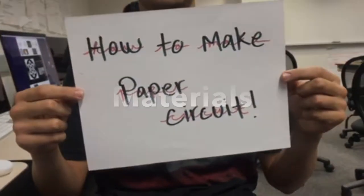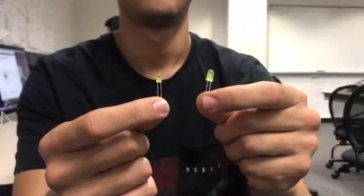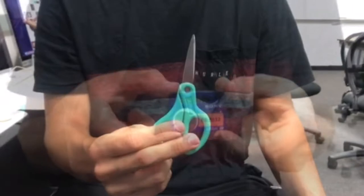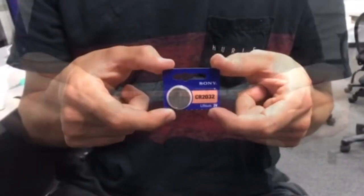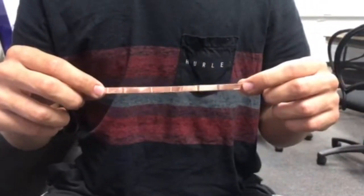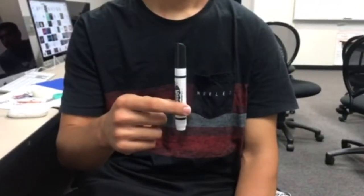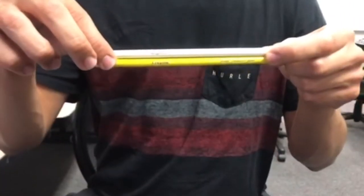How to make a paper circuit. Materials: LED lights, tape, scissors, a battery, copper tape, a piece of construction paper, a marker, and two colored pencils.